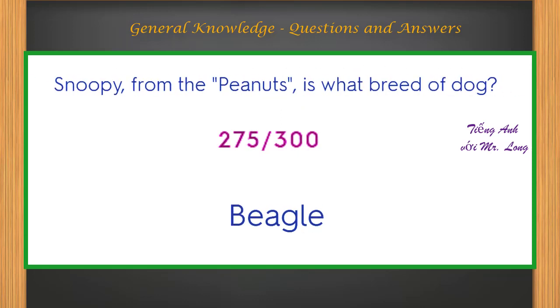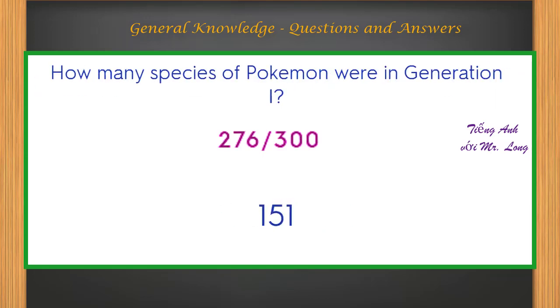Snoopy from the Peanuts is what breed of dog? Beagle. How many species of Pokemon were in generation I? 151.